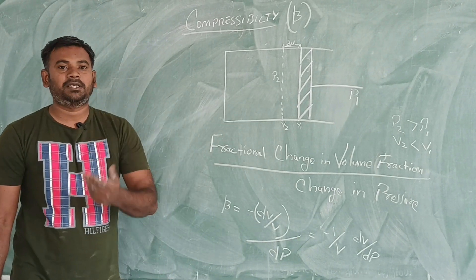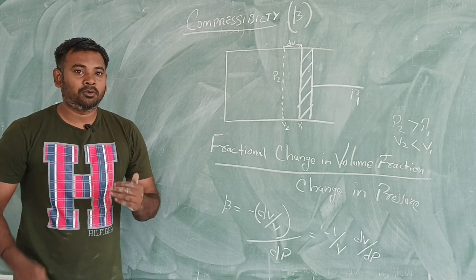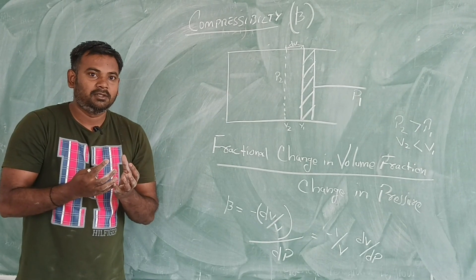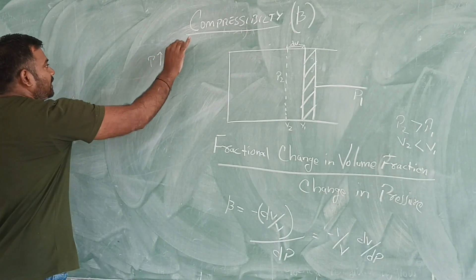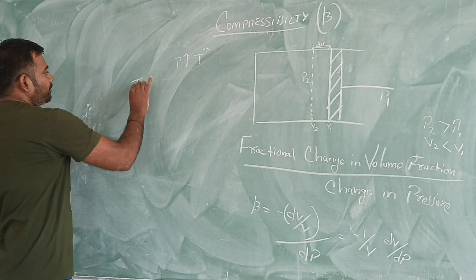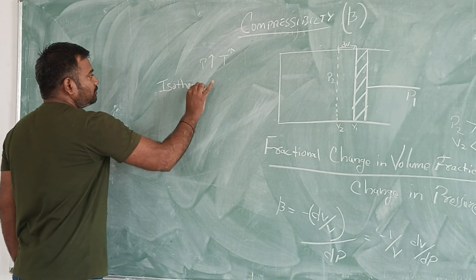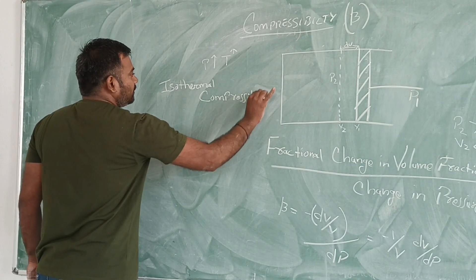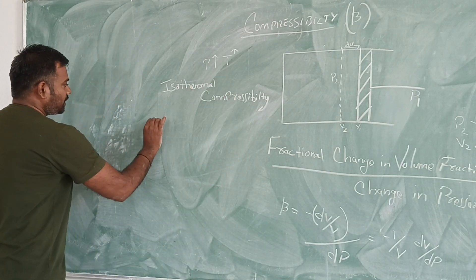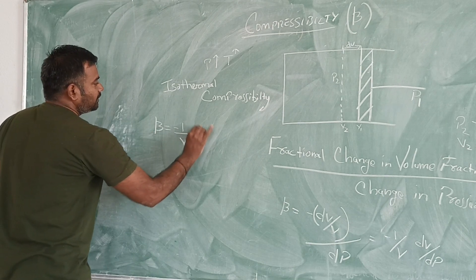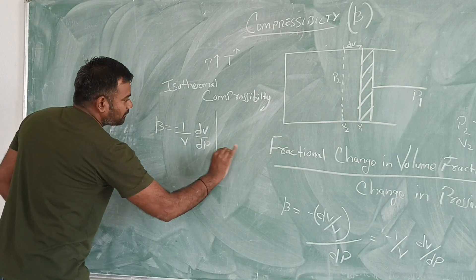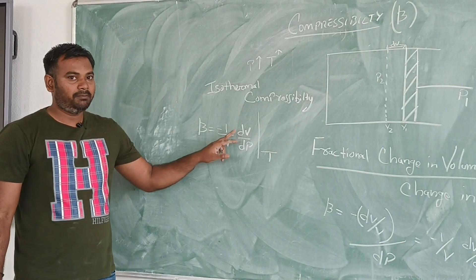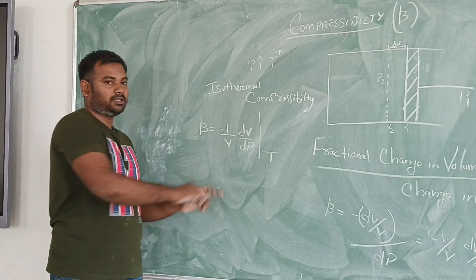When pressure increases in the cylinder, what about the temperature? As pressure increases, the molecules come closer to each other, so temperature also increases. If we hold temperature constant — that is isothermal conditions — isothermal compressibility is defined as beta equals minus one over V times dV by dP at constant temperature.